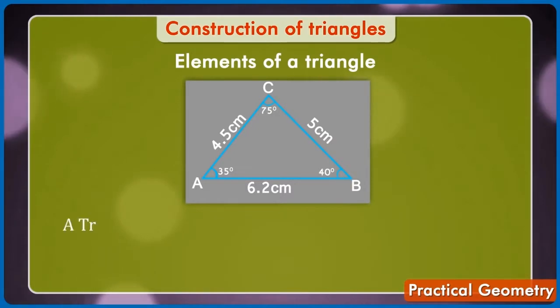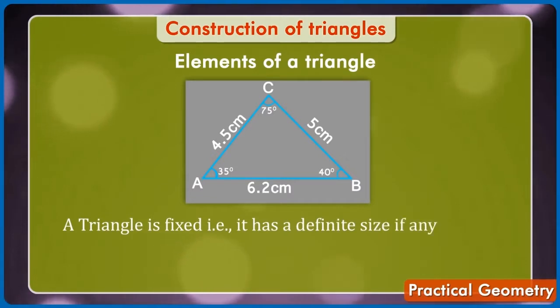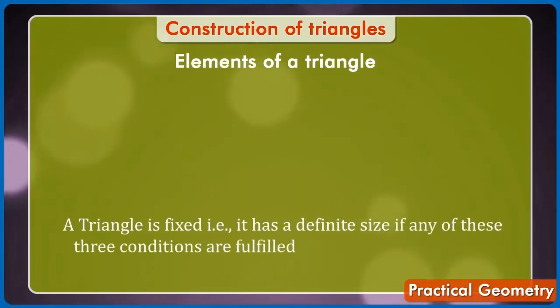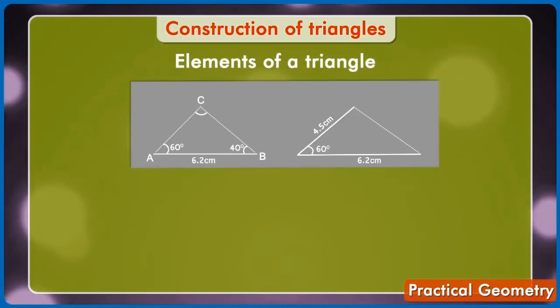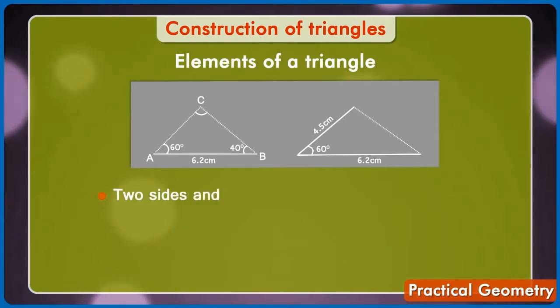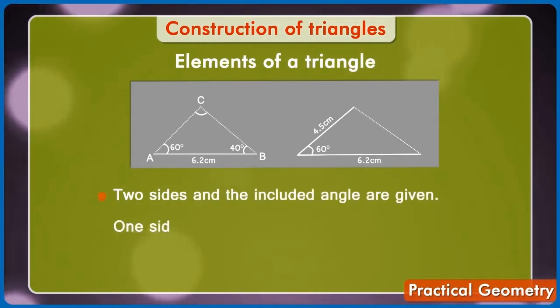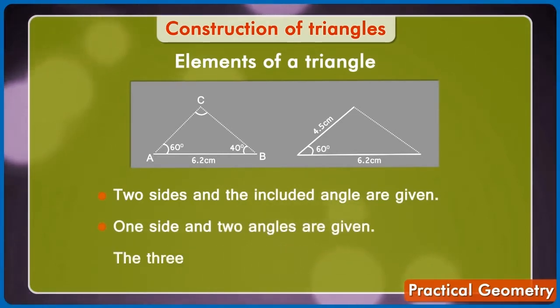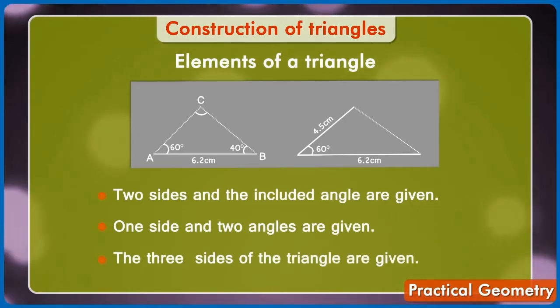A triangle is fixed, that is, it has a definite size if any of these three conditions are fulfilled and these conditions are: Two sides and the included angle are given. One side and two angles are given. The three sides of the triangle are given.